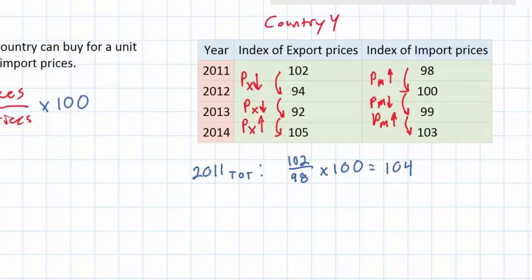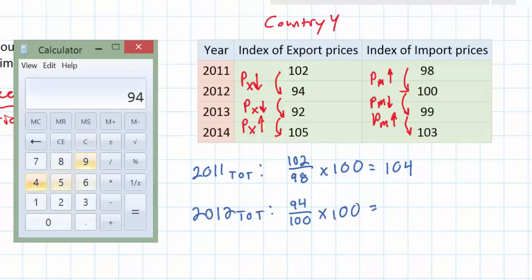We can interpret this value by saying that country Y had a favorable terms of trade in 2011. On average, one unit of country Y's exports could purchase 1.04 units of country Y's imports — this is a favorable terms of trade. For 2012, the terms of trade can be found by dividing the export index price of 94 by the import index price of 100 and multiplying by 100, giving us a terms of trade of 94.